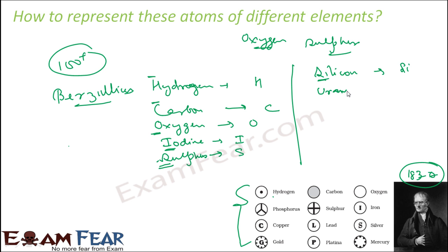Uranium by U. Neon, see, Nitrogen is represented by N. The next element found was Neon, and Neon was found after Nitrogen. So N cannot be given. So Ne was used to represent Neon.